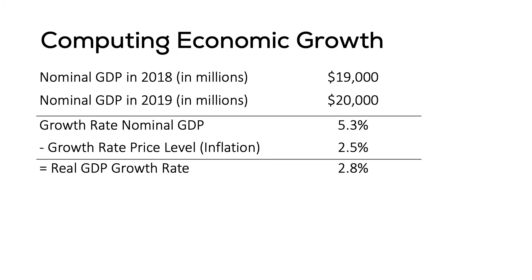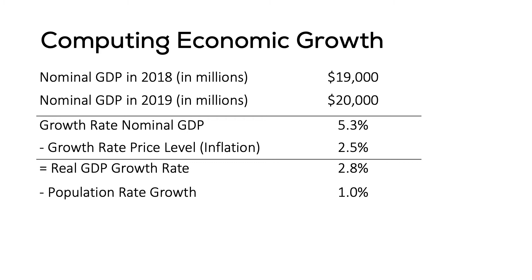During the same period, if population grew by one percent, then the real GDP per capita growth rate was 1.8 percent. That 1.8 percent might seem small after you take into consideration the other changes in the economy. One important point is that small differences in growth rates lead to large differences over generations.